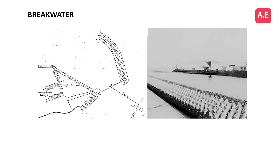A breakwater is a structure designed to reduce the impact of waves and provide protection to coastal areas, harbors, and marinas. Breakwaters are typically built parallel to the shoreline and are made of various materials such as concrete, rocks, or steel.